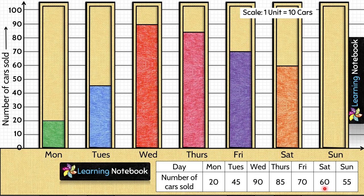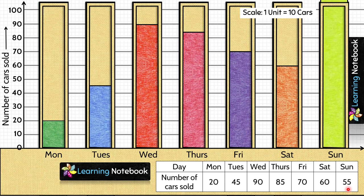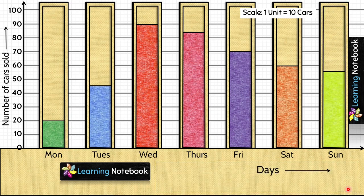And lastly, we are going to represent number of cars sold on Sunday which is 55. So let's insert a light green colored bar. So students, in this way we have formed the bar graph to represent the given data.